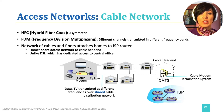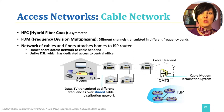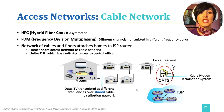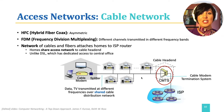In cable TV infrastructure, different channels are transmitted in different frequency bands. Unlike DSL, which has a dedicated connection to the central office, homes share the access network to the cable headend. Cable modem at the home end and cable modem termination system at the office end perform the analog-digital encoding and decoding. A specific property of the cable network is its broadcast nature, meaning that all data sent by the headend travels downstream on every link to every home.